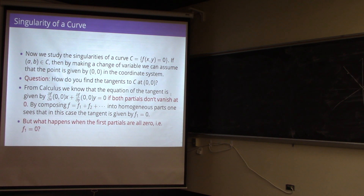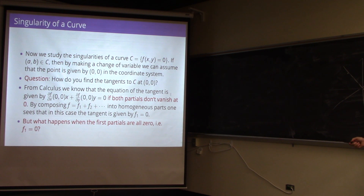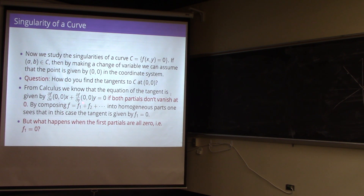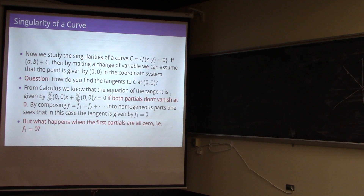From calculus, the equation of the tangent is given by the partial derivative of f with respect to x evaluated at (0,0) times x, plus the partial derivative with respect to y evaluated at (0,0), as long as both partials don't vanish. By decomposing f into the sum of homogeneous parts, you can see that the tangent equation is just f₁ = 0 — a line of the form ax + by = 0.